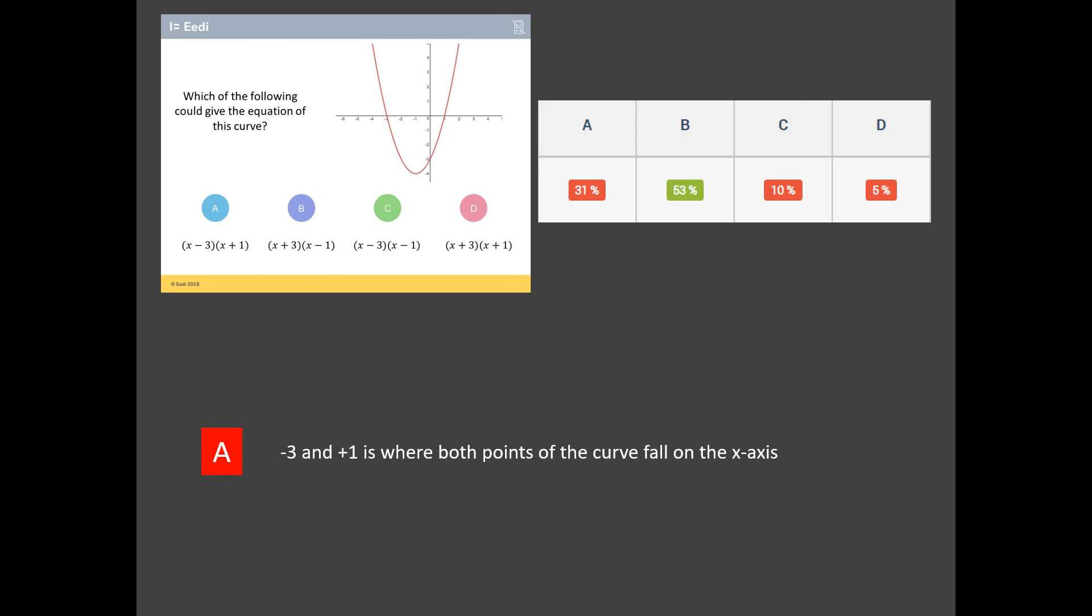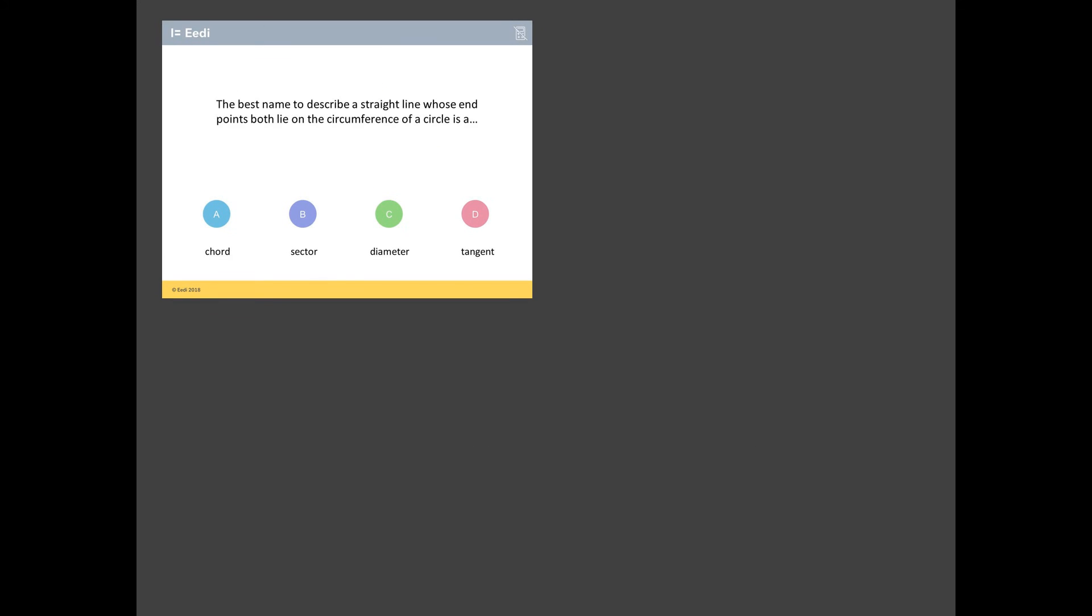Which brings us to the worst answered question. And it is this question here. Now, this is interesting. This is a definitions question. And often definitions questions are well answered. But this is really poorly answered. So something must be going on. So let's have a look. The best name to describe a straight line whose endpoints both lie on the circumference of a circle is? Let's draw one in. Let's imagine that's the center of our circle.